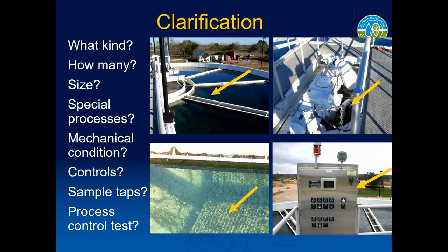Clarification. There are all kinds of clarifiers. There are conventional clarifiers of all shapes and sizes, solids contact clarifiers, blanket clarifiers, upflow solids contact clarifiers, and regular upflow clarifiers. Not all conventional clarifiers are rectangular or square — sometimes they're round. New investigators tend to assume that if it's round it must be a solids contact unit, so it takes a few years to train them up to know what they're looking at.